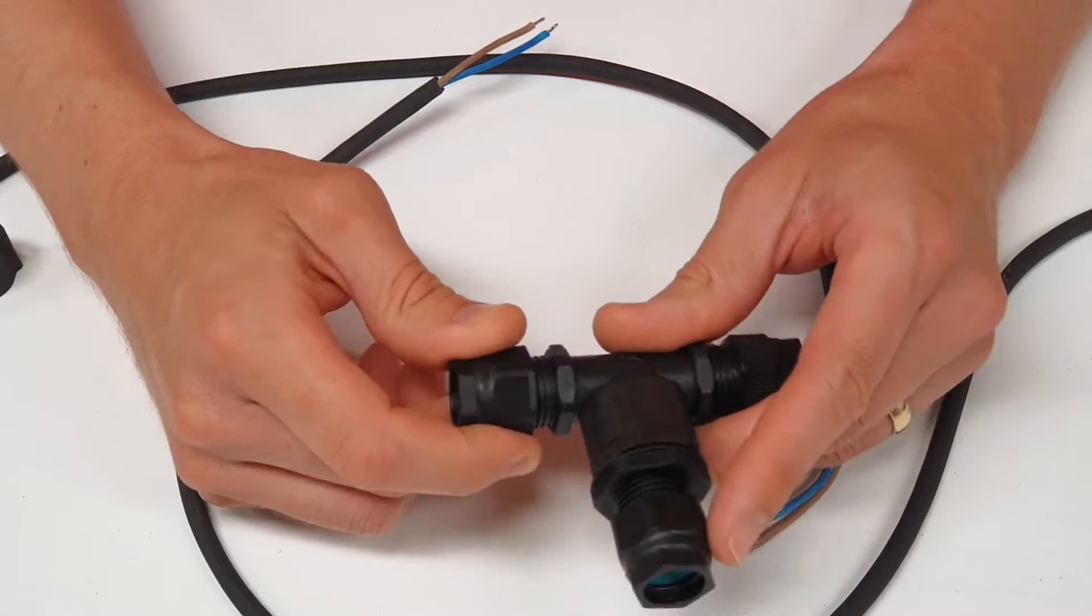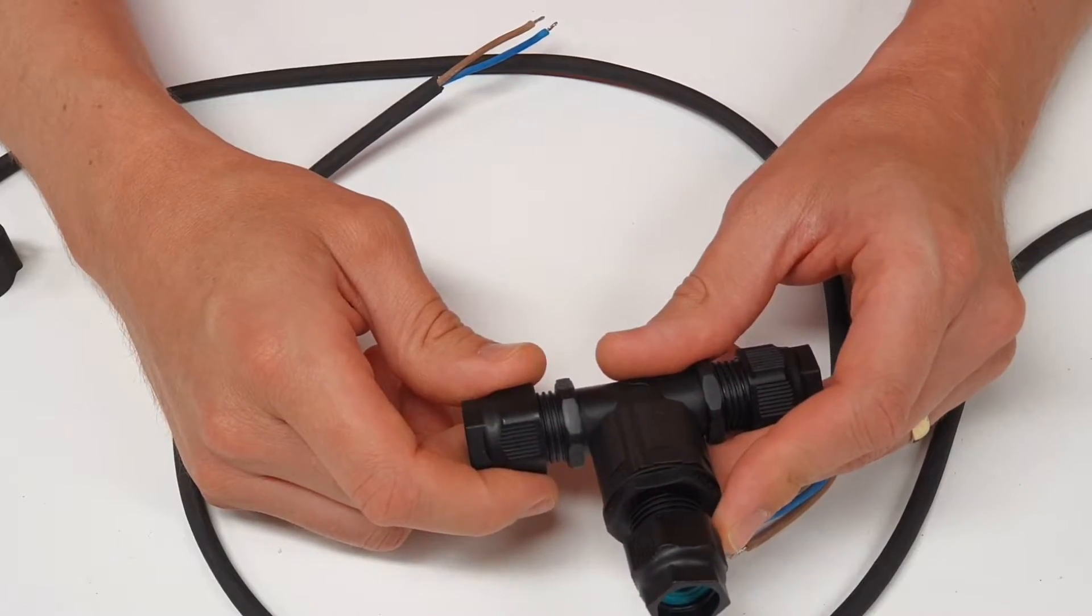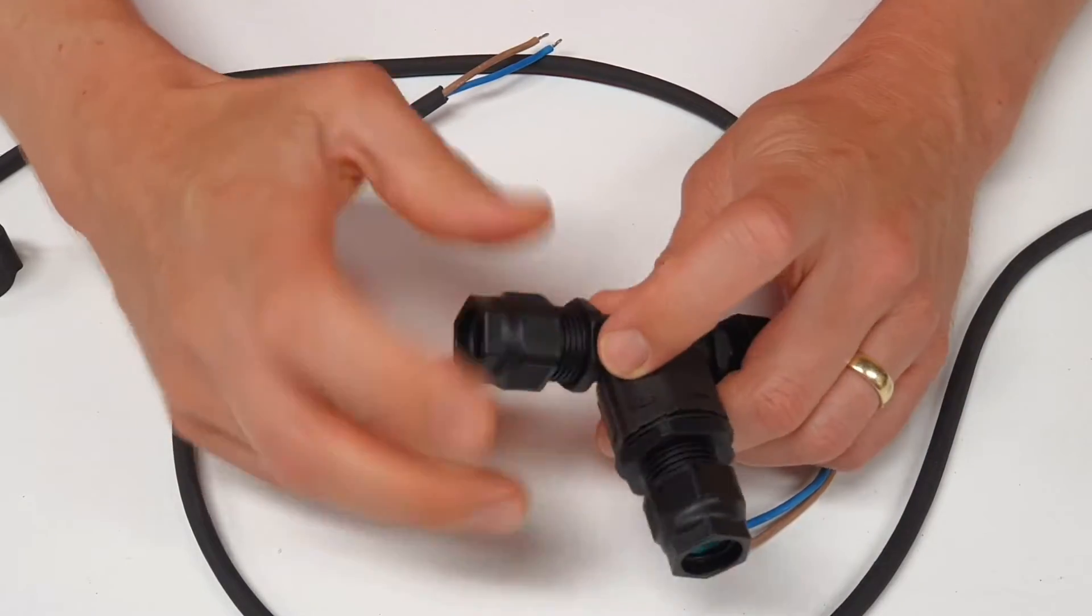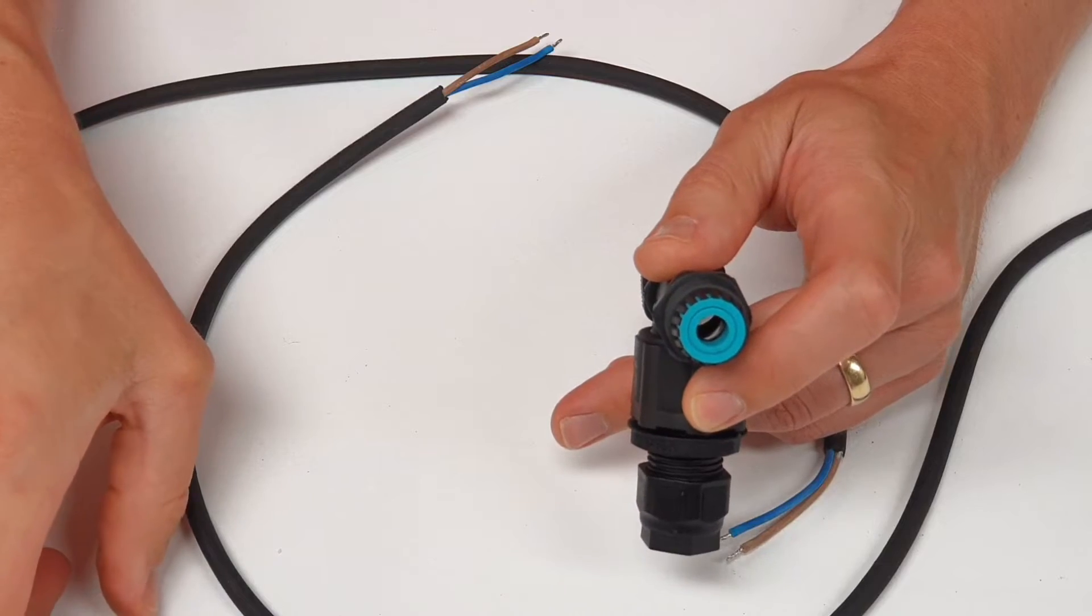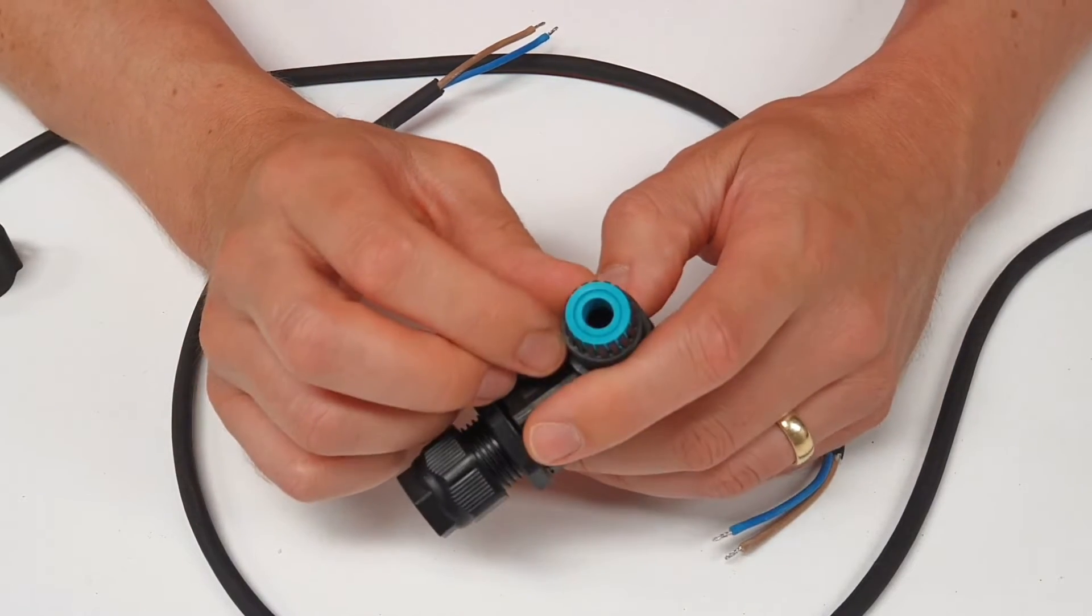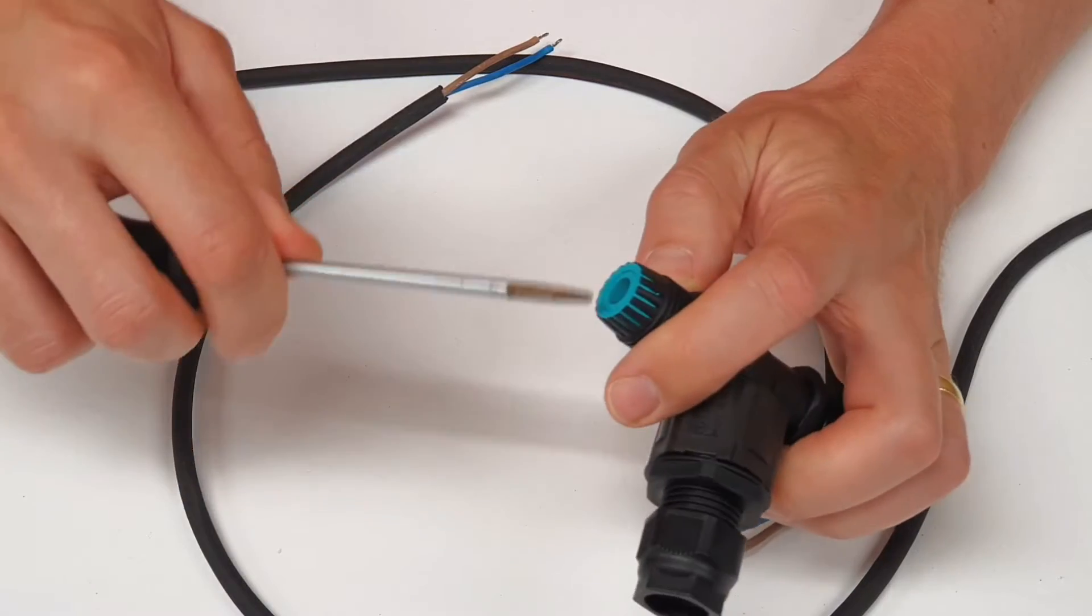We're going to bring the cables through these glands on the end. Even these are really clever as they can accommodate a wide range of cable diameters. You'll notice that these have this kind of ring inside them here and that's because there's a dual layer to the insert.